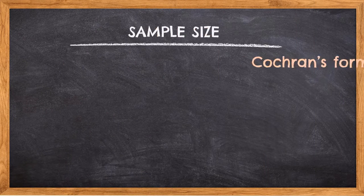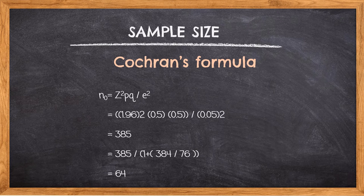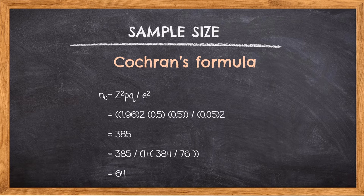By using Cochrane's formula to calculate a sample size of a large population whose degree of variability is not known, the maximum variability which is equal to 50%, P equals 0.5, with 95% confidence level and 5% margin of error, the calculation for required sample size will be as follows: n0 equals Z squared PQ divided by E squared, equals 1.96 squared times 0.5 times 0.5 divided by 0.05 squared, equals 385. Then n equals 385 divided by 1 plus 384 divided by 76, equals 64.